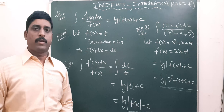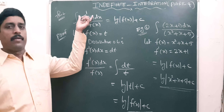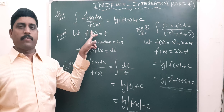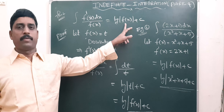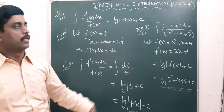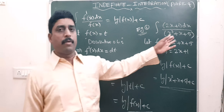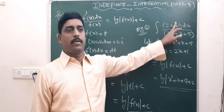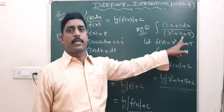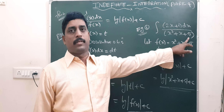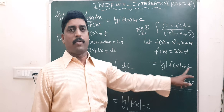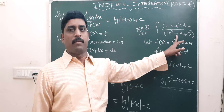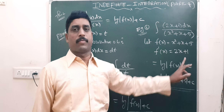In this theorem we observe one point: f'(x) is the derivative of f(x). So 2x+1 is the derivative of x² + x. Therefore the formula is log mod f(x) plus c, where f(x) is the denominator value x² + x + 5.